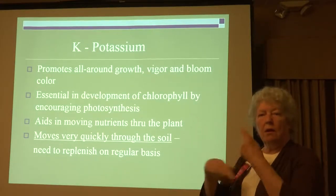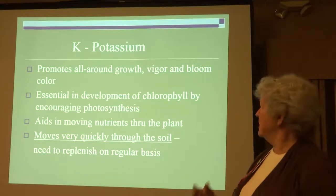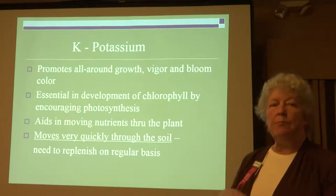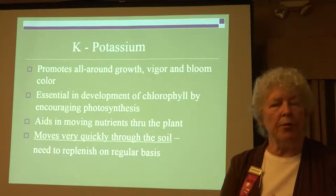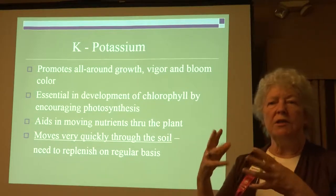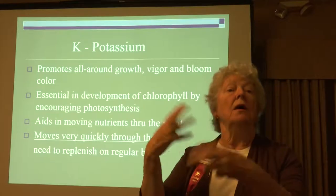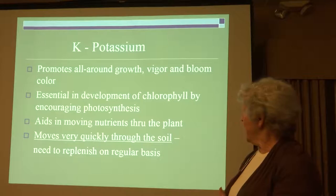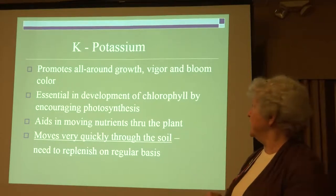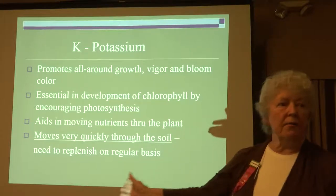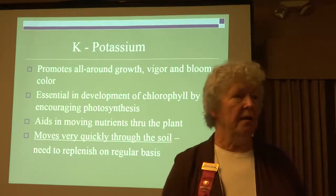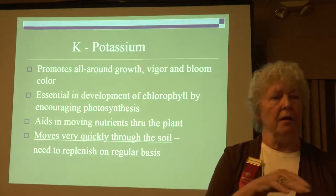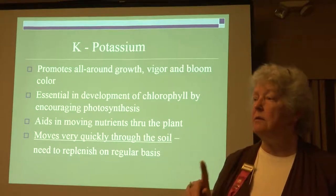Potassium is good for all-around growth, vigor, and vitality. Nice color — it's a very essential element in making chlorophyll. Remember in spring when leaves are bronze and red and purple, they have to get green by making new chloroplasts — they need potassium. It helps move nutrients around and is very good at hooking things together. But it can flush out really fast, so keep an eye on your potassium levels.